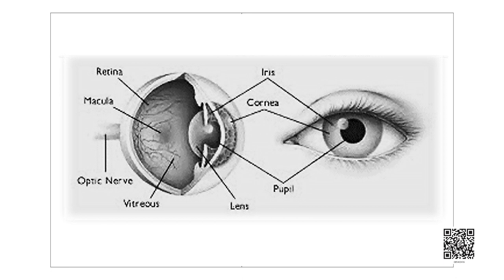The cornea is a transparent part. The iris lies behind the cornea and it is a dark muscular structure. The iris part of the eye gives its distinct color — some of us have green eyes, some have blue eyes, some have brown or black eyes. This is due to the iris. The pupil is the small opening in the iris, and the size of the pupil is controlled by the iris.